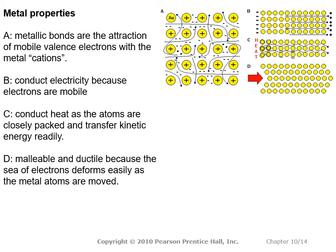Let's review metallic properties. Metallic bonds are the attraction of mobile valence electrons for the metal cations, shown in A. They conduct electricity because the electrons are mobile — new electrons coming in allow the original electrons to move out. They conduct heat because the atoms are closely packed and transfer kinetic energy easily. And they are malleable because the sea of electrons deforms easily as the metal atoms are moved — the metals can shift but are still surrounded by their sea of electrons.